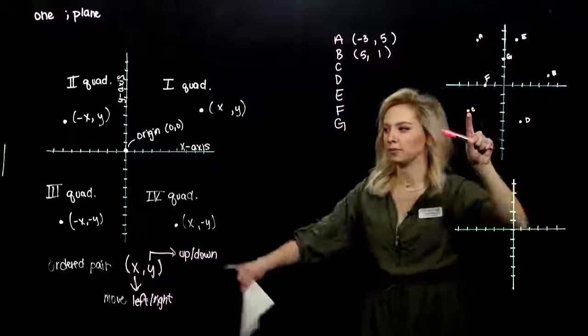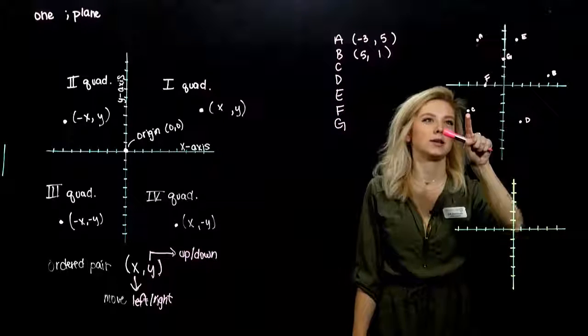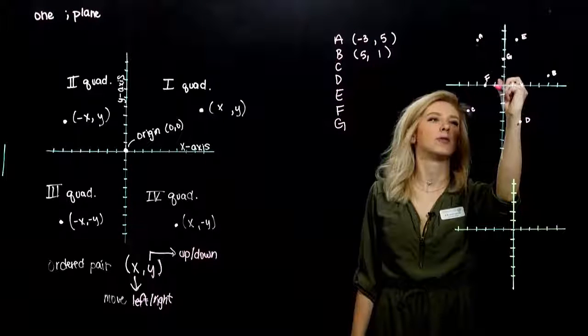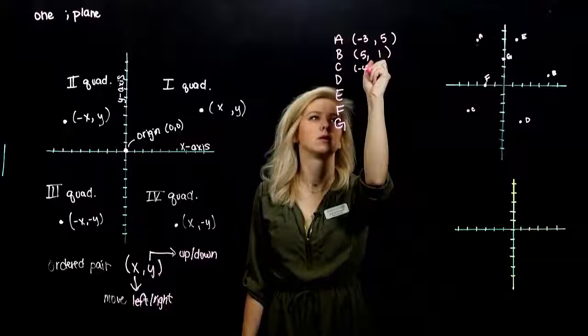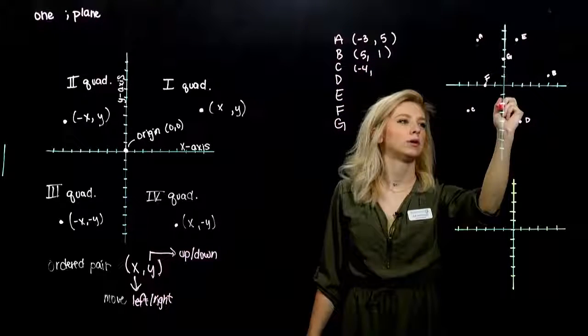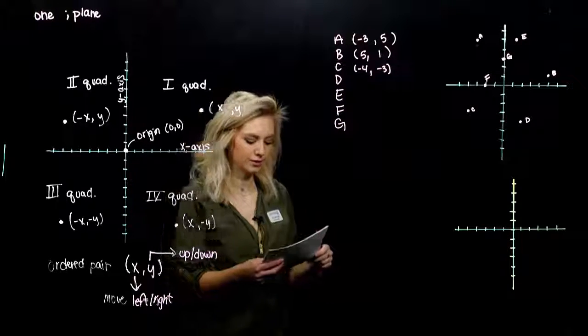C is in the third quadrant. So I've got negative, negative. How many x coordinates did I move over? One, two, three, back four. And down one, two, three. So minus four, minus three. That gives us the coordinates for C.